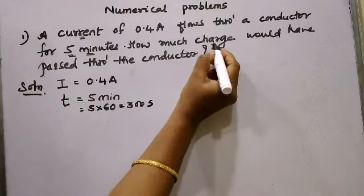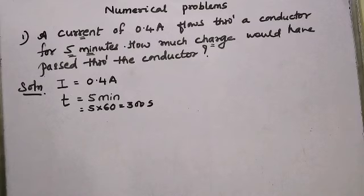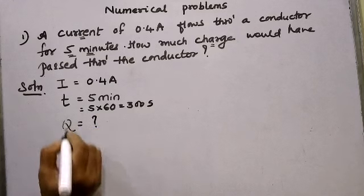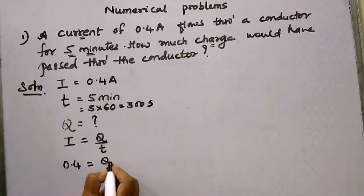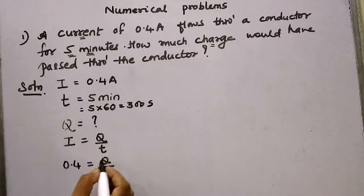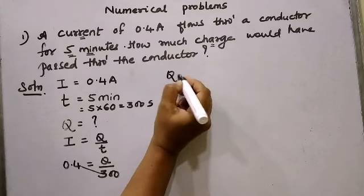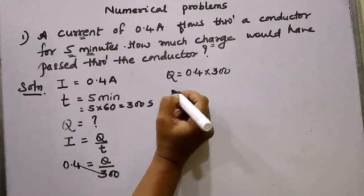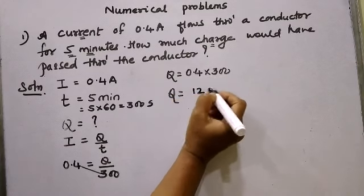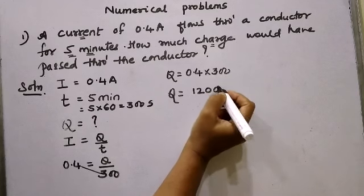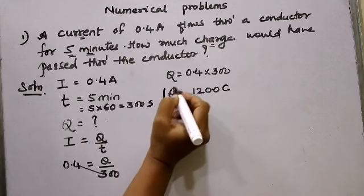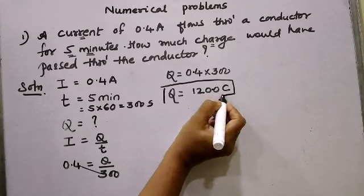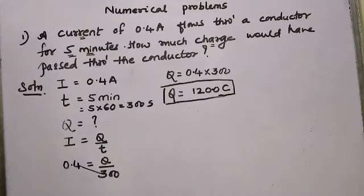That gives 300 seconds. How much charge would have passed through the conductor? Charge is denoted Q, and Q is to be found. The formula is I equals Q upon T. So 0.4 equals Q divided by 300. Therefore Q equals 0.4 × 300. Calculating: 4 × 3 = 12, with two zeros from 300, giving 1200; then placing the decimal one place from the right gives Q equals 120 coulombs. A charge of 120 coulombs will flow through the conductor in 5 minutes if a current of 0.4 amperes flows through the conductor.